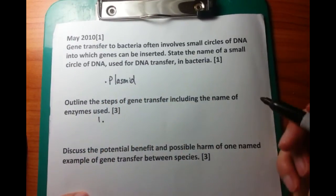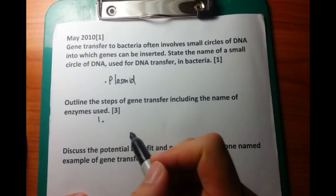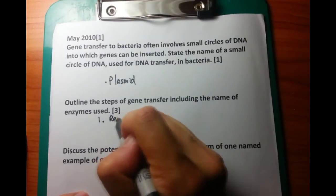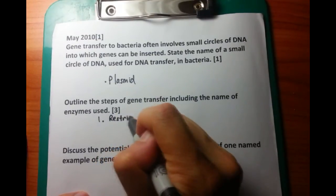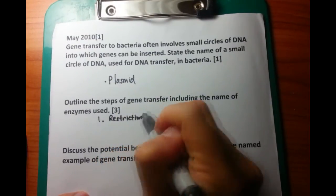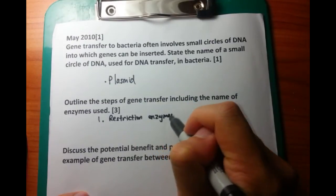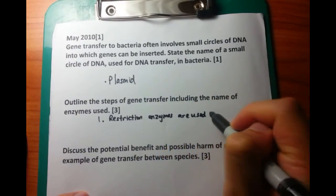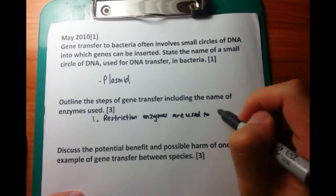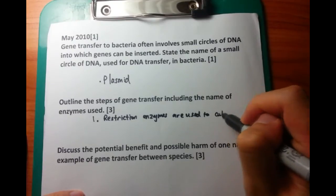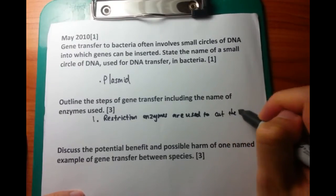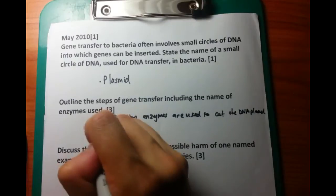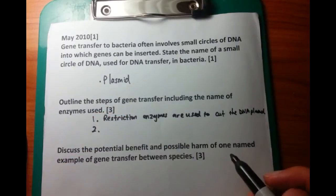The next question asks to outline the steps of gene transfer including the names of enzymes used. We're going to go through four different steps. The first step is breaking apart the plasmid — you use restriction enzymes to cut that DNA plasmid.